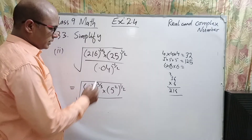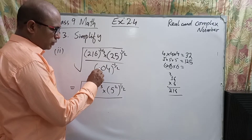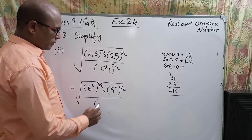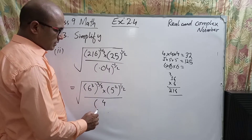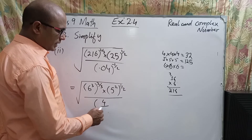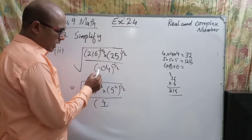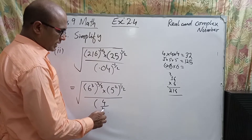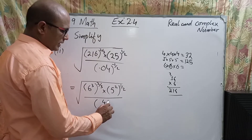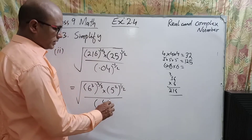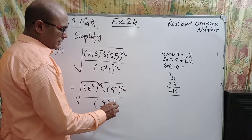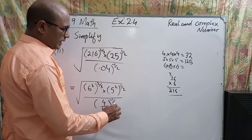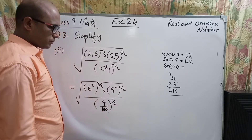In the next step we have to remove the decimal. When we remove the decimal from 0.4 we get 4 in the numerator, and because there are two digits after the decimal we get 100 in the denominator. Its whole exponent is minus 1/2.